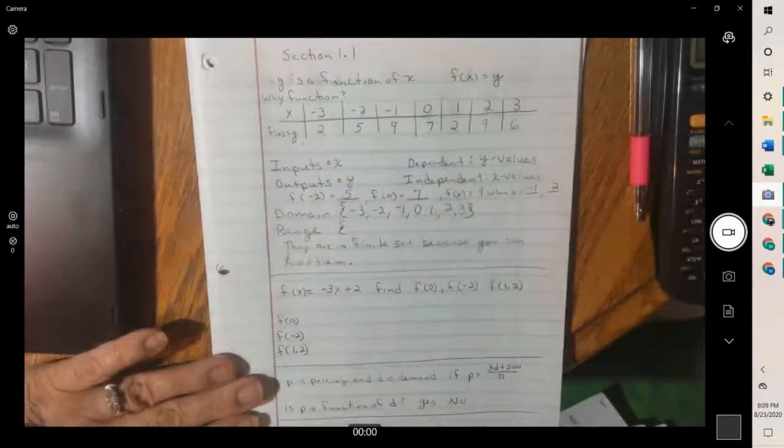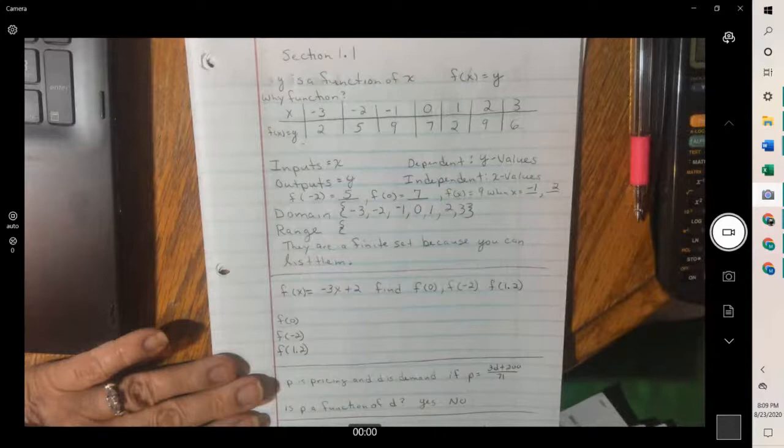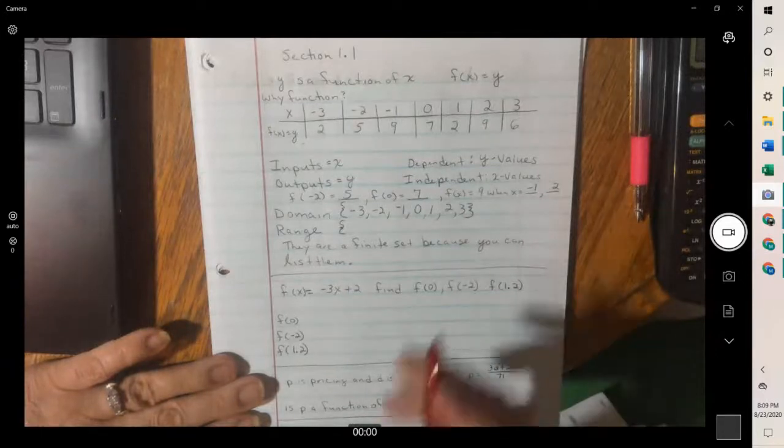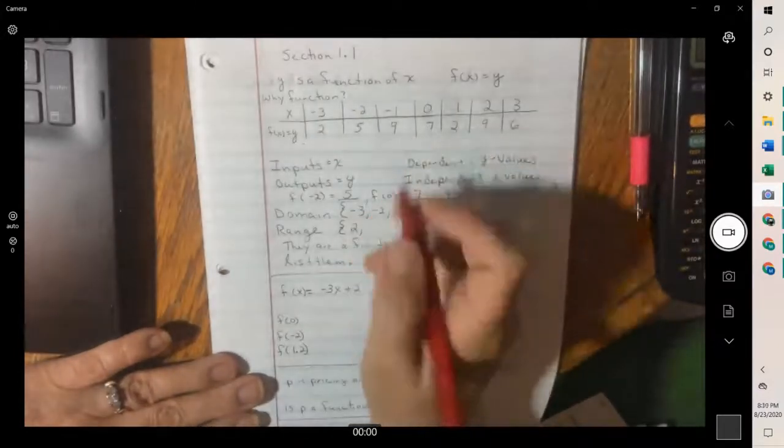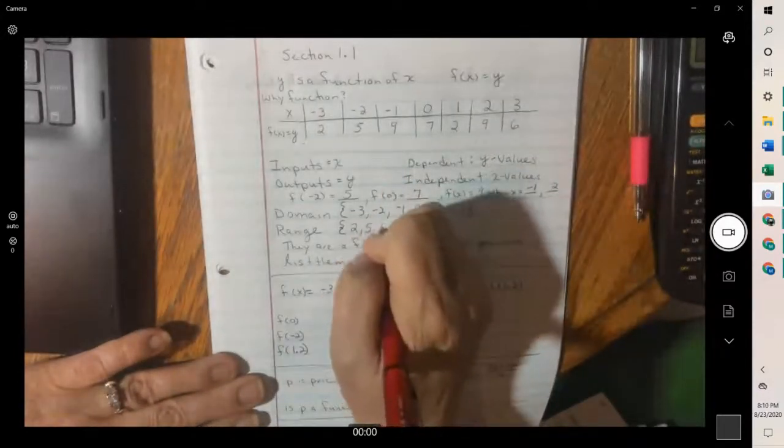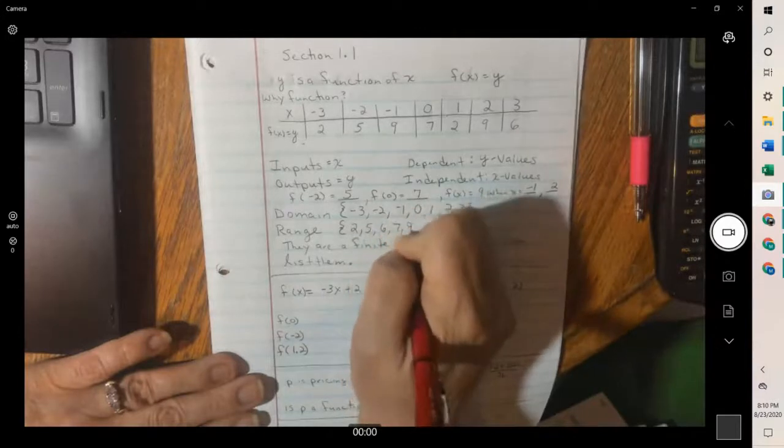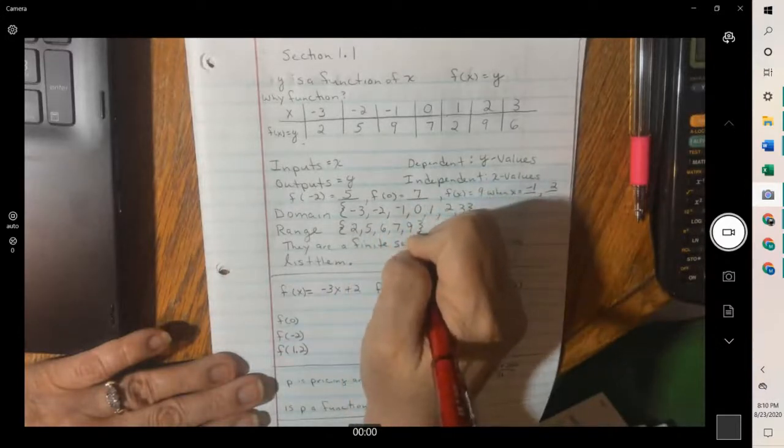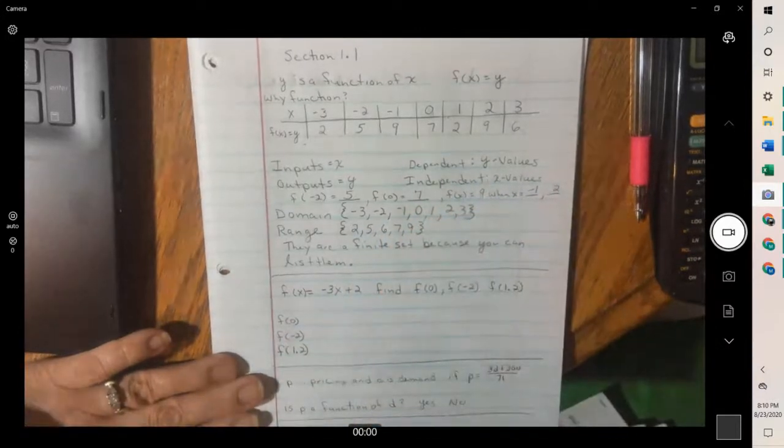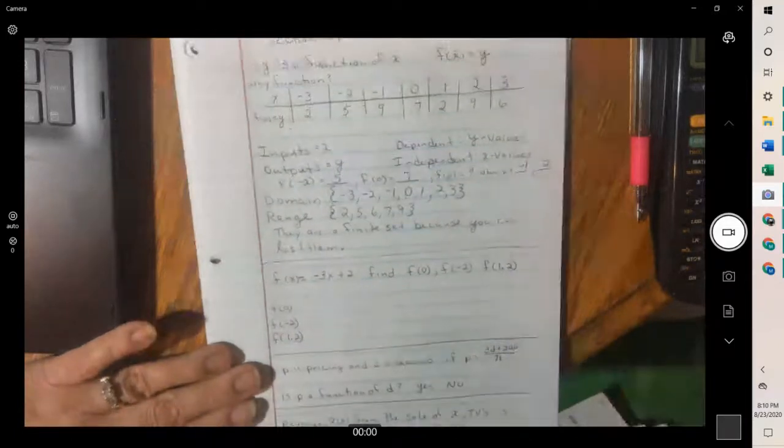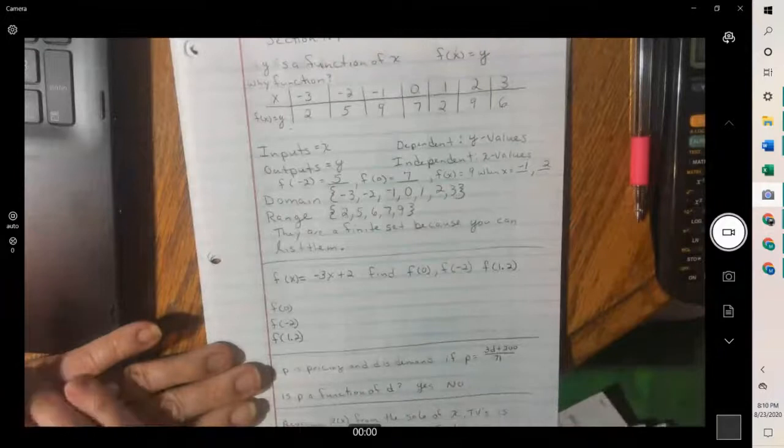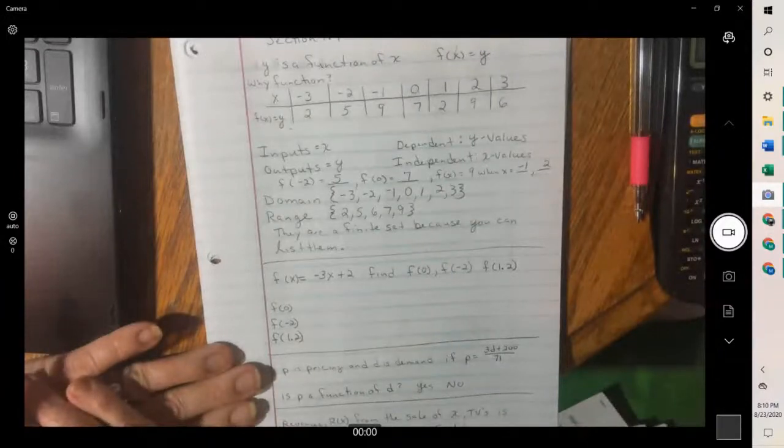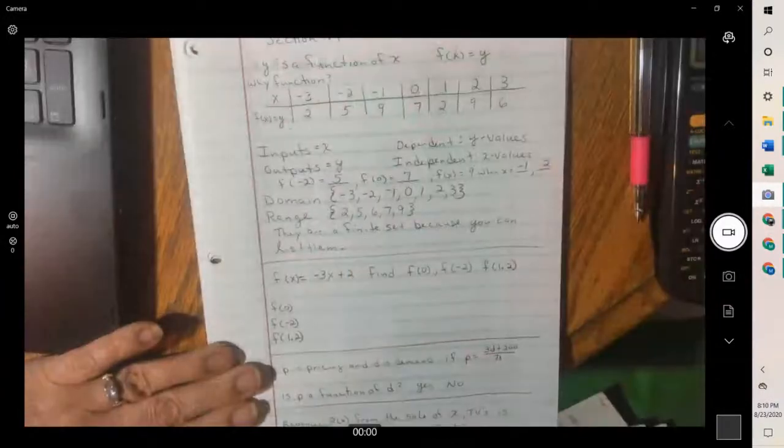For the range, you would also list them. But if any repeat, you don't have to write them twice. So we have a two. We have five, six, seven, and nine. Usually they ask in numerical order. Sometimes they don't care. But you do not need to repeat the nine was there twice and the two, you don't have to put them twice. And it is a finite set because we can list them.